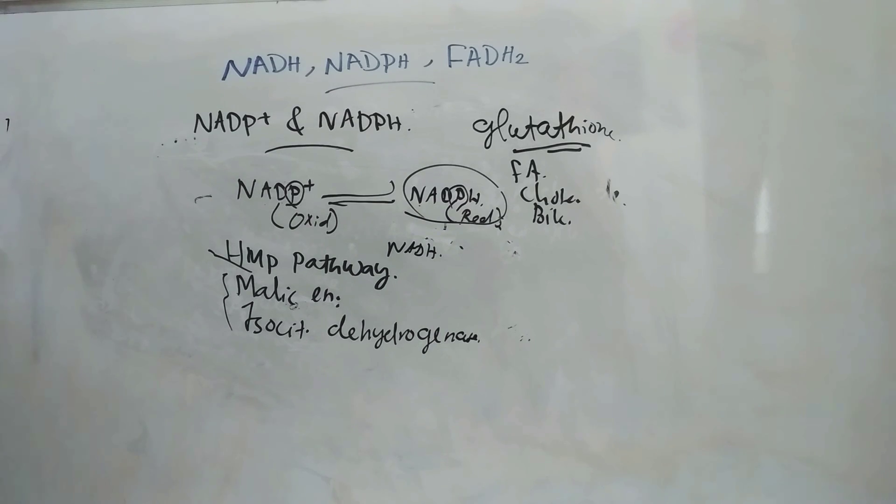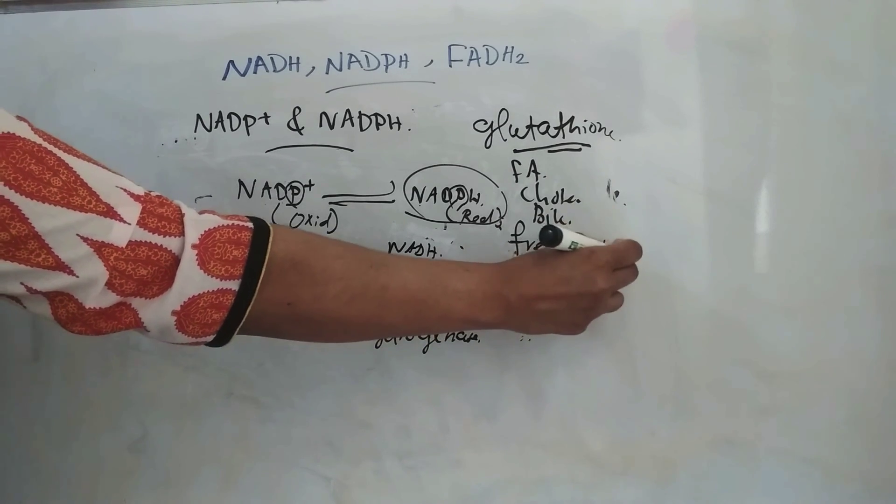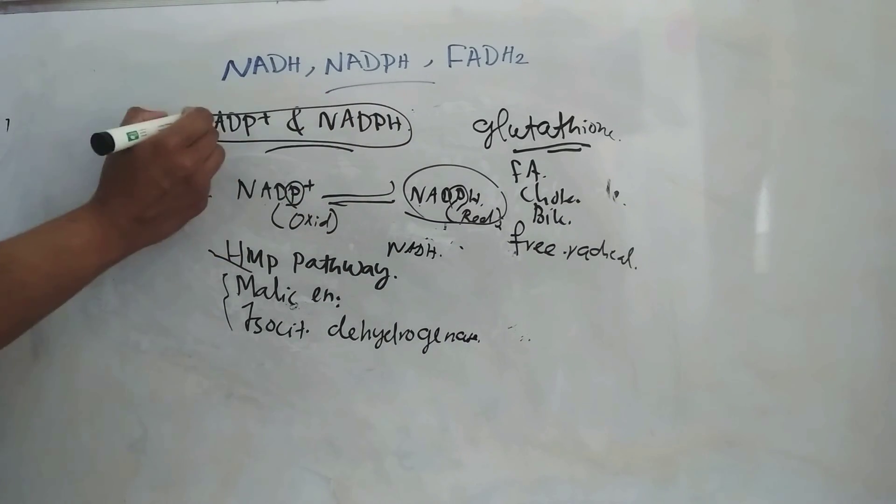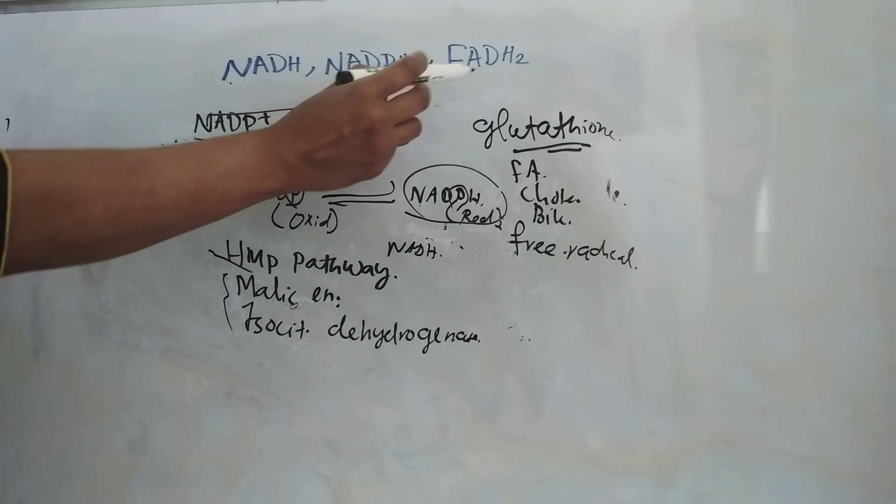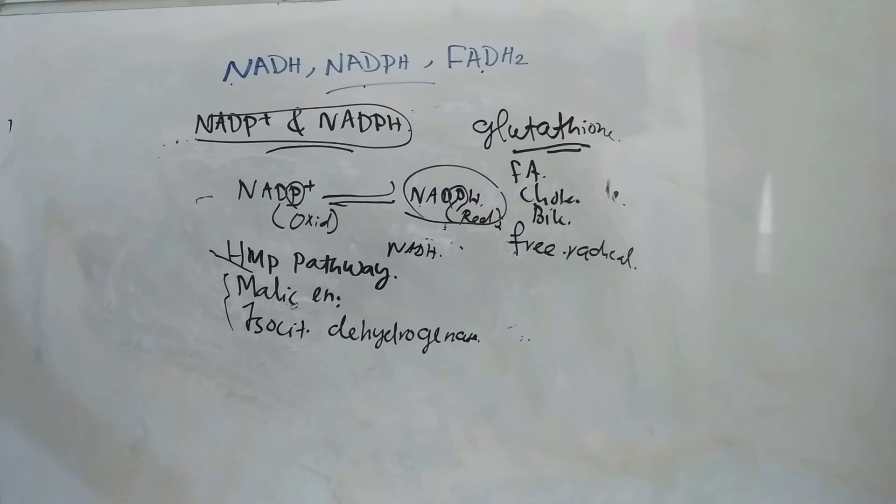Then NADPH is also responsible for generating free radicals in immune cells. That is about NADP plus and NADPH. So this is all about NADH, NADPH and FADH2. This is today's topic. Thank you for watching.